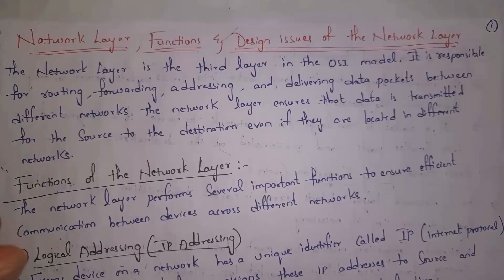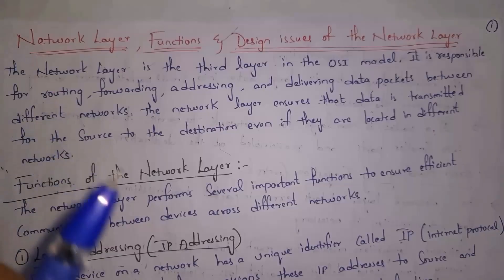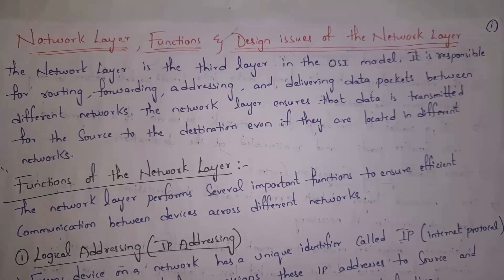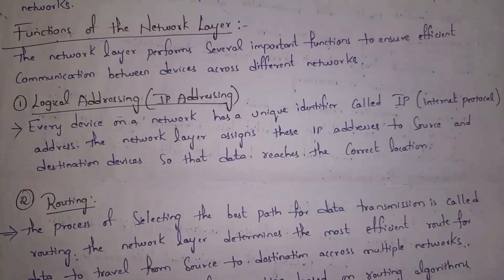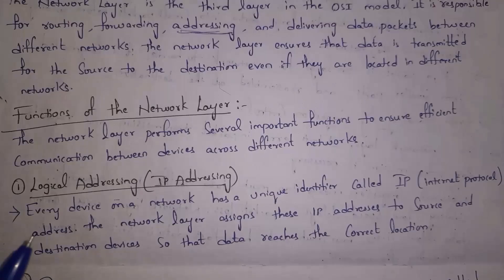For example, one company is in Hyderabad and another company is in the UK. The company in Hyderabad is one network and the company in UK is another network. Even though the companies are in different networks, they can communicate with each other by using the network layer. Now I will explain the functions of network layer. The network layer contains different types of functions — by following all these functions, all devices can communicate with each other even if they are located in different networks.